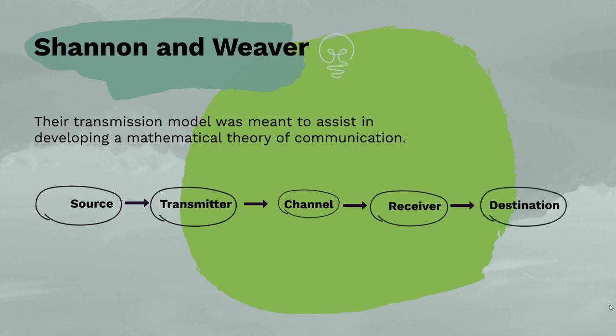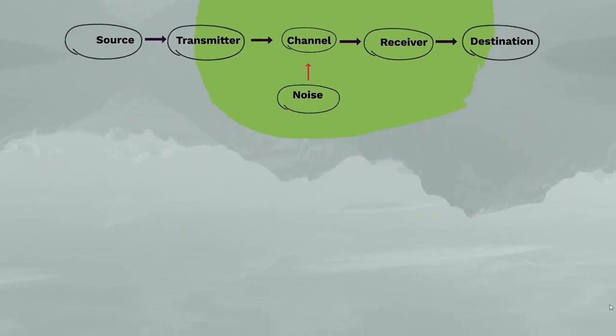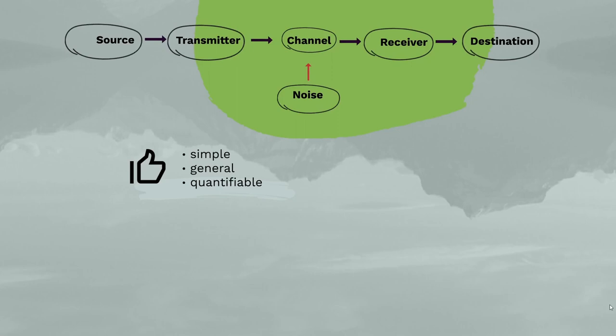The fifth element is a destination, where the message arrives. The sixth and last element is noise, which refers to any interference in the channel that might lead to the signal being distorted, altered, or made incomprehensible. Although very technical at its conception, the model has found its way into many academic disciplines, communication theory included. The model's simplicity, generality, and quantifiability has turned it into a fundamental part of many communication theories developed subsequently.